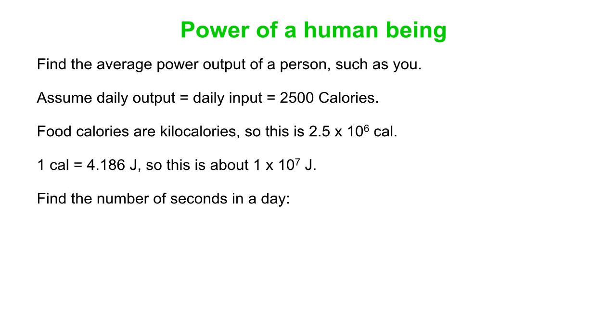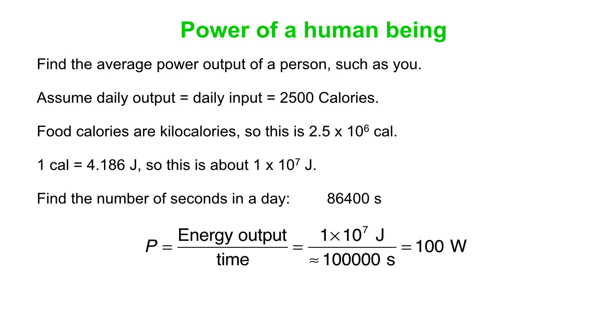24 hours, 60 minutes, 60 seconds, gets you 86,400 seconds. We'll round that off to about 100,000. So if you divide your energy output, 1 times 10 to the 7 joules by time which is around 10 to the 5 seconds, you get about 100 watts.